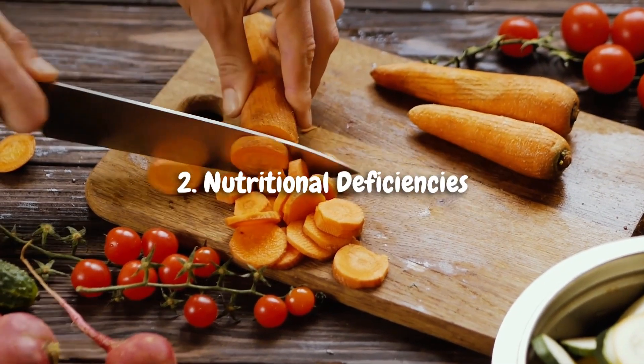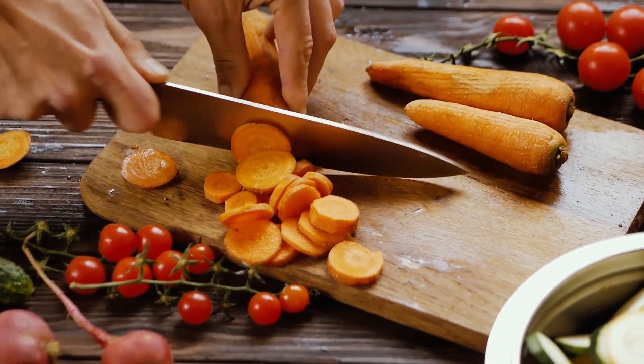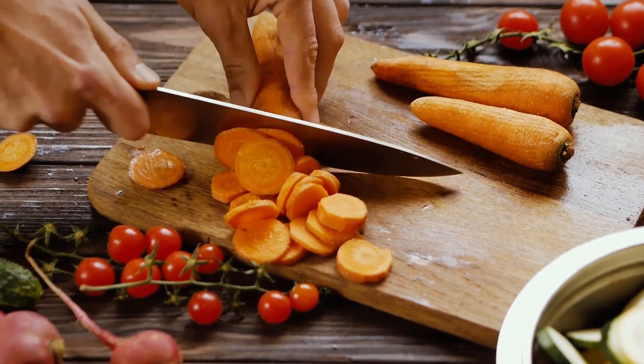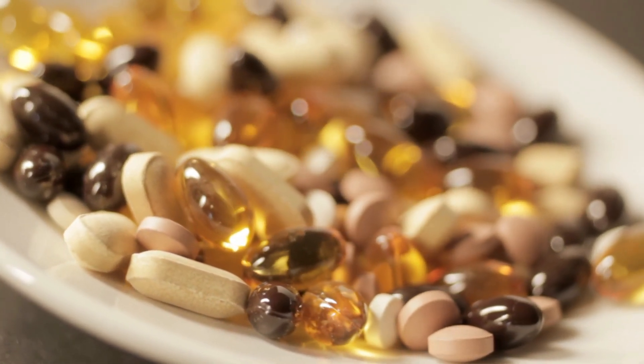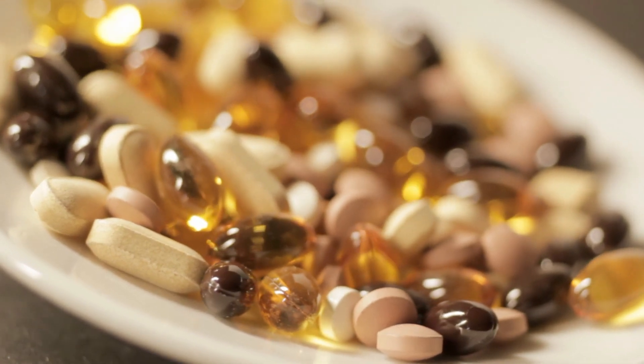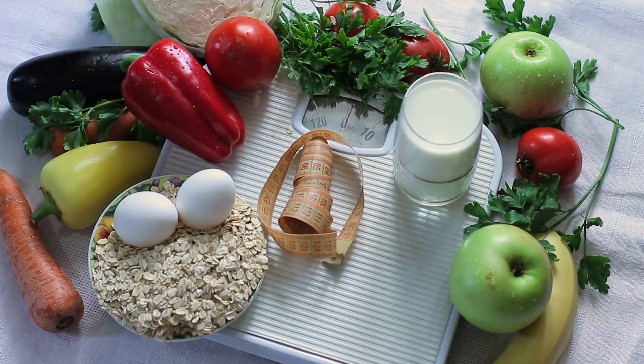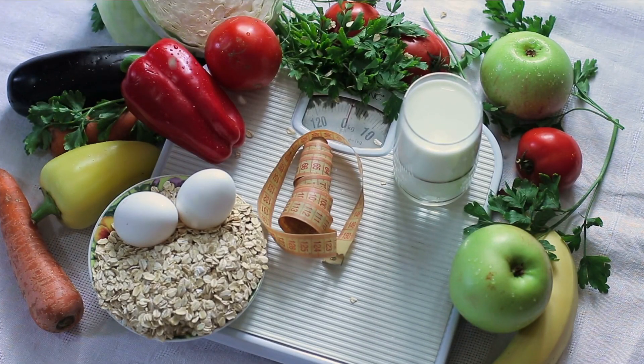2. Nutritional Deficiencies. Vertical lines on nails can sometimes be a sign of nutritional deficiencies. Inadequate intake of essential nutrients like vitamins A, C, and E, as well as minerals like zinc and iron, can impact nail health.